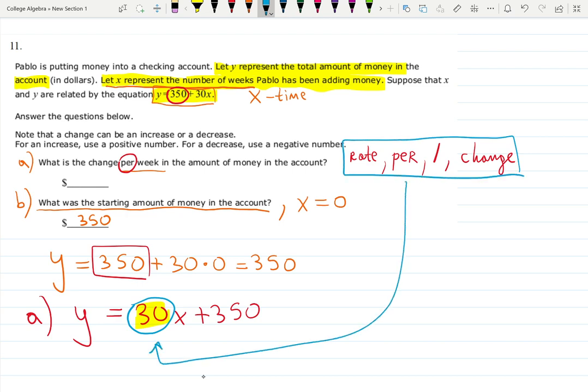In this case that's exactly my change, so this is what I'm gonna put in the blue box. That's what they are talking about. That's why if you see this keyword, what is the change, that's the keyword, per is a keyword, per week in the amount of money in the account. That's the change, so that's why the answer for A is 30.